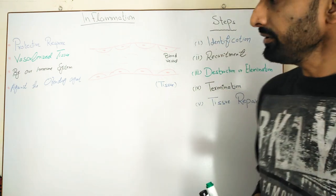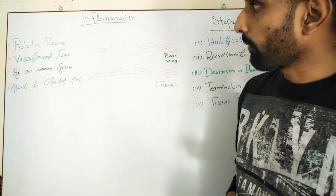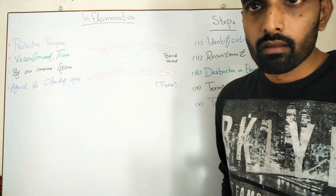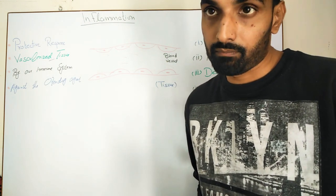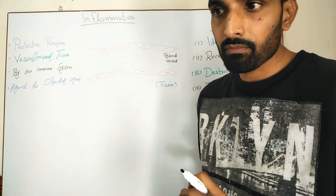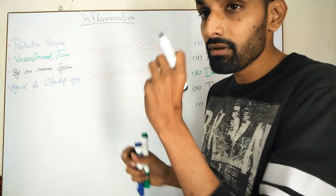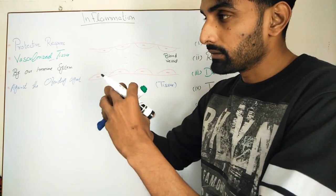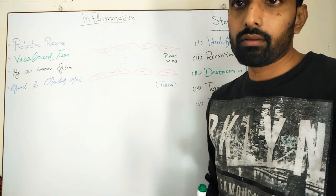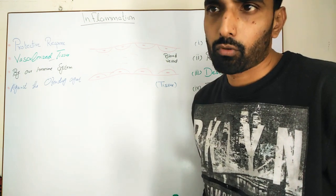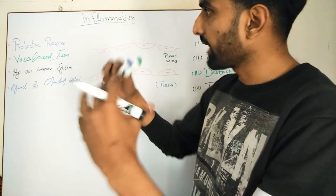So let's start from the definition. Inflammation is not a bad thing — it's basically a protective response of our vascularized tissue against foreign particles, against damaged tissue, and against any invading pathogen. Whenever a pathogen enters inside the body, the protective response of that vascularized tissue — tissue that must have a supply of blood vessels — by our immune system against the offending agent is called inflammation.